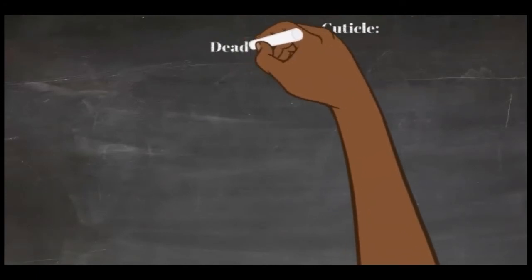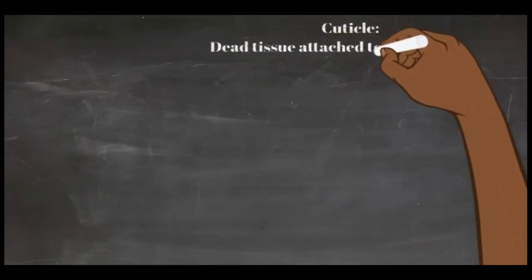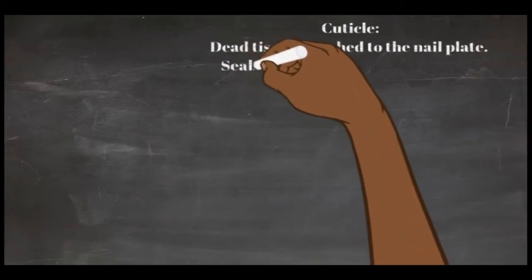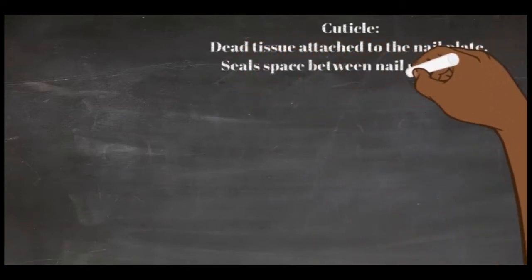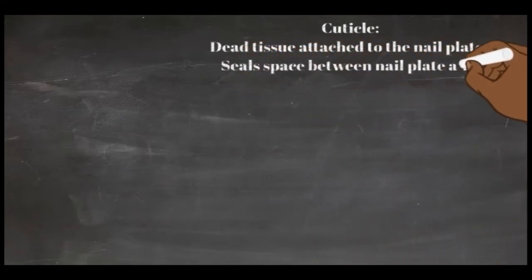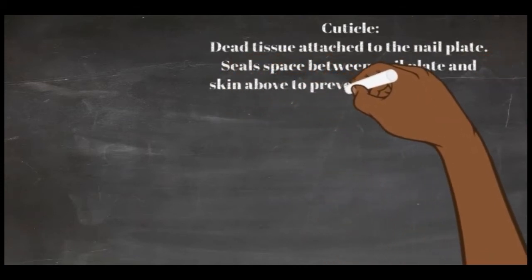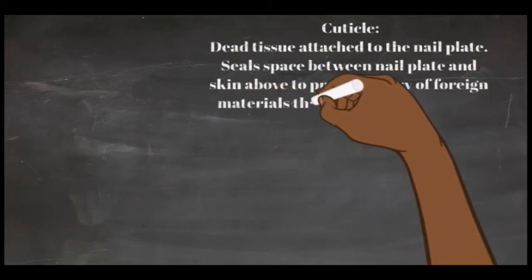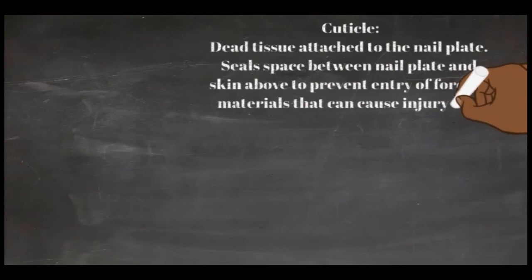The cuticle is a dead, colorless tissue attached to the nail plate. The cuticle comes from the underside of the skin that lies above the natural nail plate. This tissue is incredibly sticky and difficult to remove from the nail plate. Its job is to seal the space between the natural nail plate and the living skin above the epithelium to prevent entry of foreign materials and microorganisms and to help prevent injury and infection.